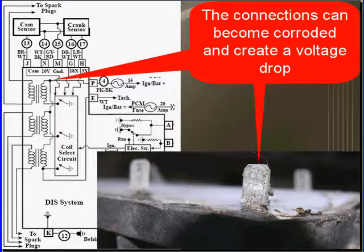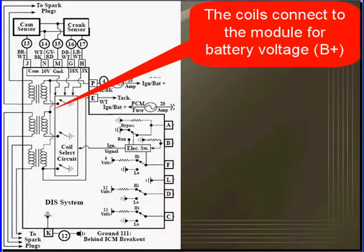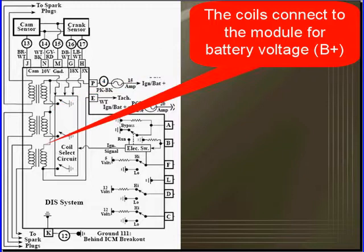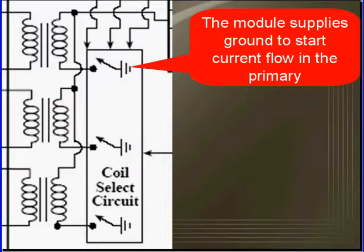The connections can become corroded and create a voltage drop as you see here in this example. Each coil connects to the module with wires or tabs. The module supplies the ground to start the current flow. Each coil has its own ground.